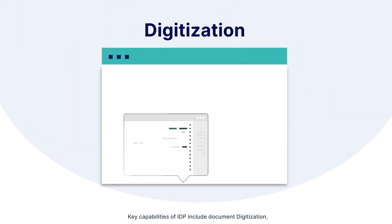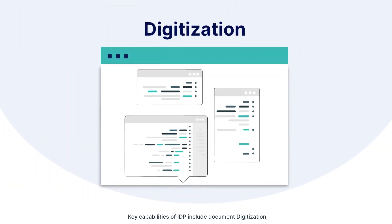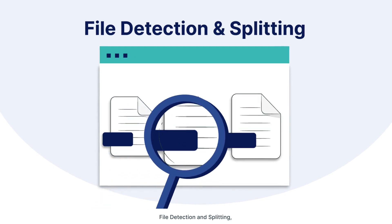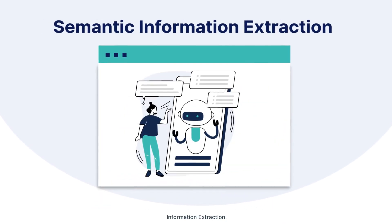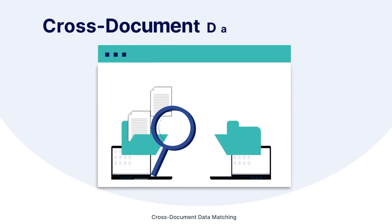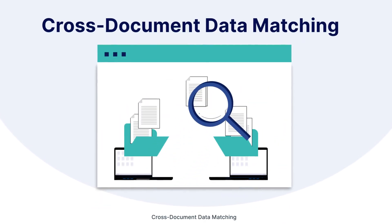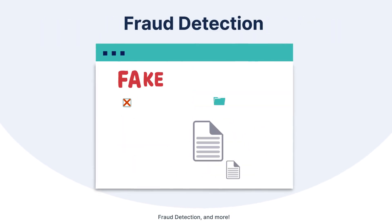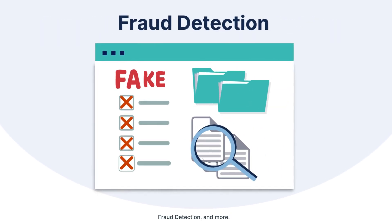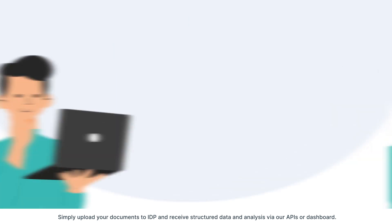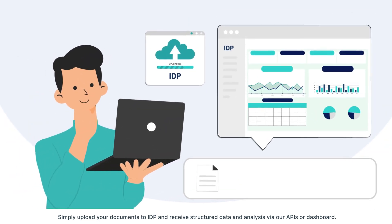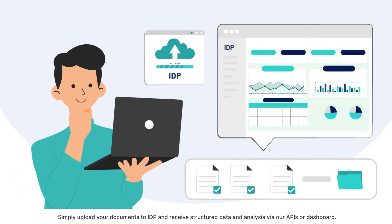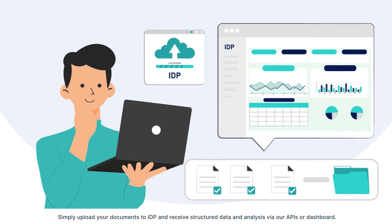Key capabilities of IDP include document digitization, file detection and splitting, information extraction, cross-document data matching, custom rules checks, fraud detection, and more. Simply upload your documents to IDP and receive structured data and analysis via our APIs or dashboard.